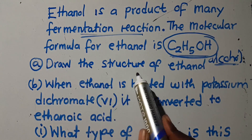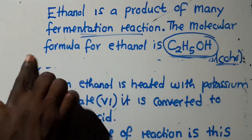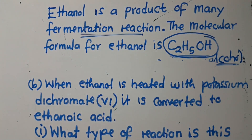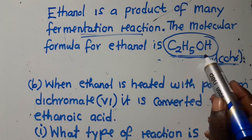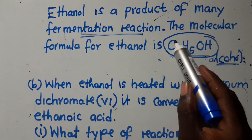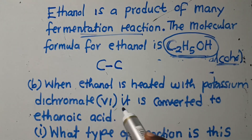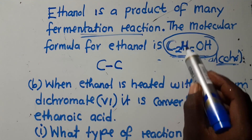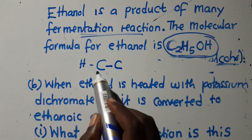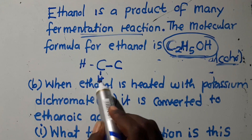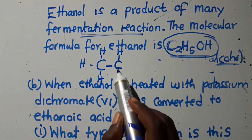The first question is asking us to draw the structure of ethanol. It is very easy to draw the structure of ethanol because the formula has already been given. We know that we've got two carbons, so I'm going to draw carbon and carbon. Then I've got five atoms of hydrogen surrounding these carbons — hydrogen, hydrogen, hydrogen here, hydrogen here.